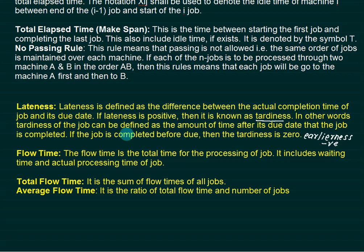Whatever model we are using, tardiness should be as small as possible — the job should be completed before its due date. Flow time is the total time of processing of the job; it includes the waiting time and the actual processing time. The total flow time is the sum of the flow times of all jobs, and the average flow time is the total flow time divided by the number of jobs. In the SPT rule, average flow time will be very less, and in the Earliest Due Date (EDD) rule, the tardiness will be very small.